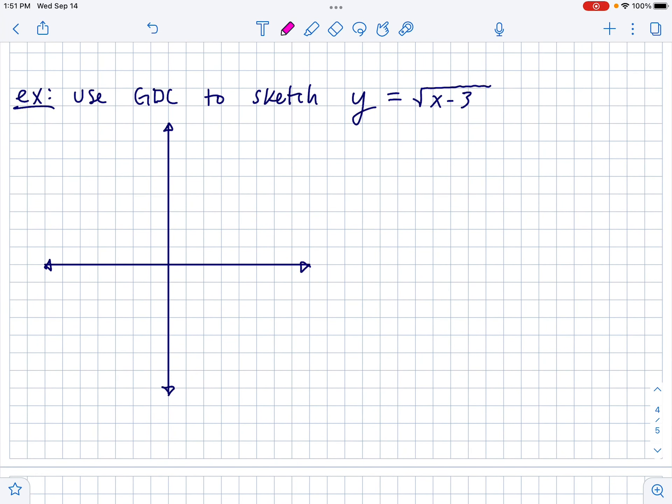So, next one. Use the GDC to sketch the square root of x minus 3. Well, down the road, you should know that the square root function is what I call the space dolphin. So, I know it's some kind of space dolphin. And this actually tells me that it's been shifted 3 to the right. So, it starts at positive 3 and then it jumps out of the water going this direction. There it is.